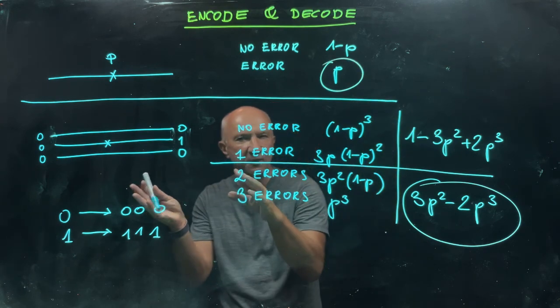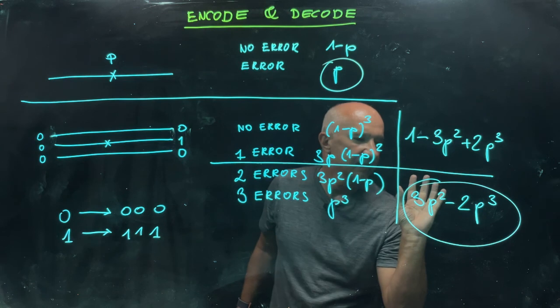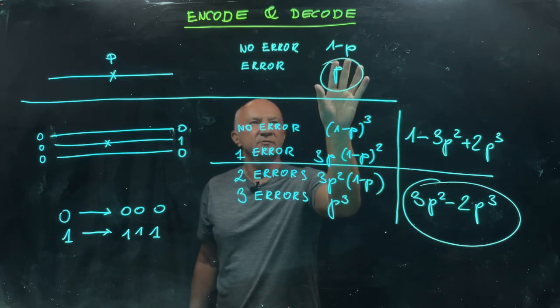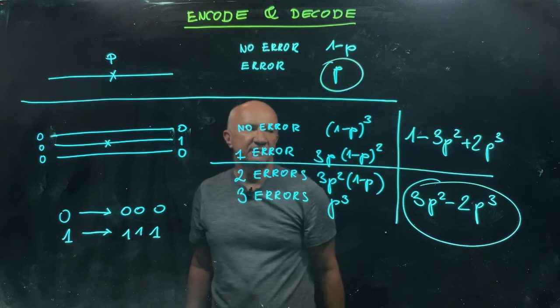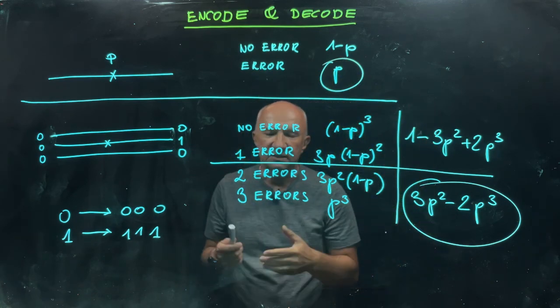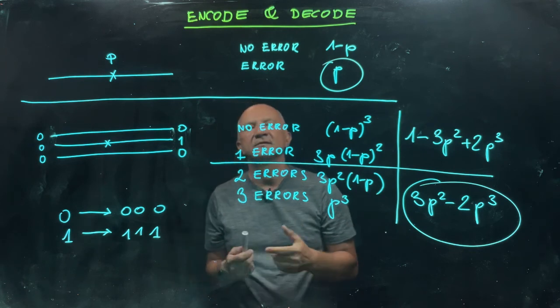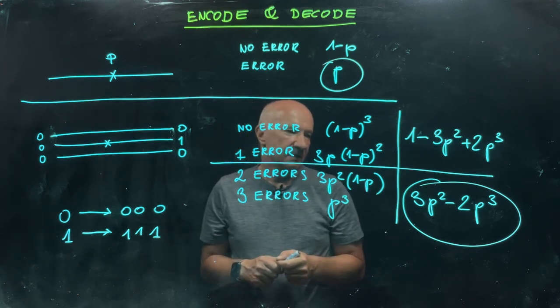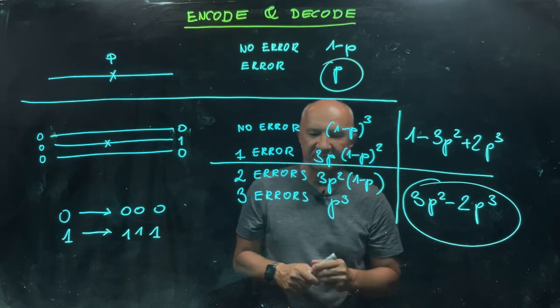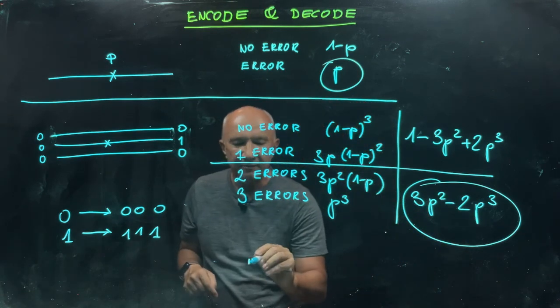When we work hard—we do encoding and decoding—we get error with this probability. When we don't do anything, this is the probability of error. Now, those numbers—the p is small, like say 1% or less.